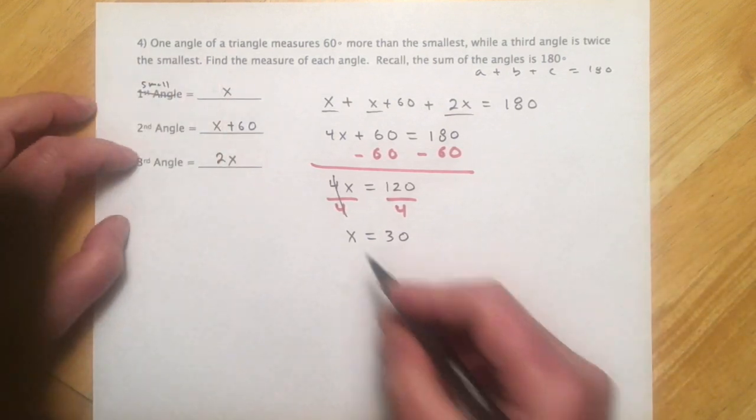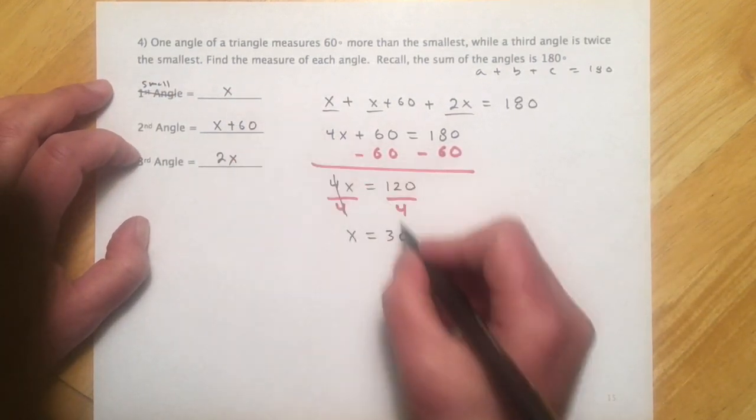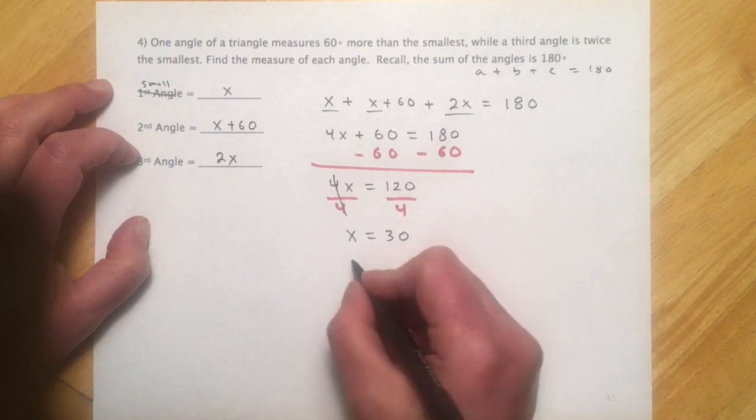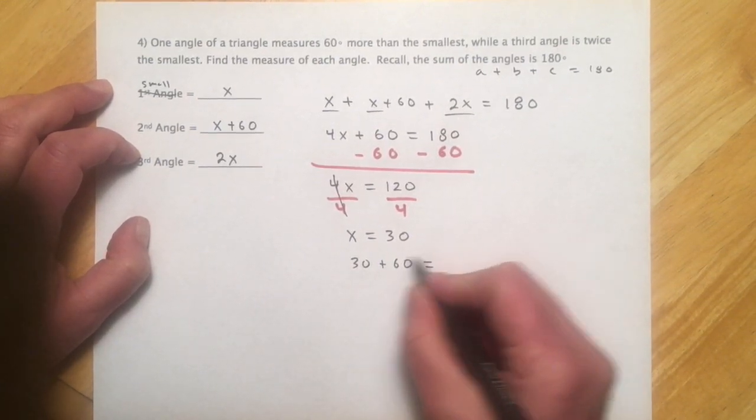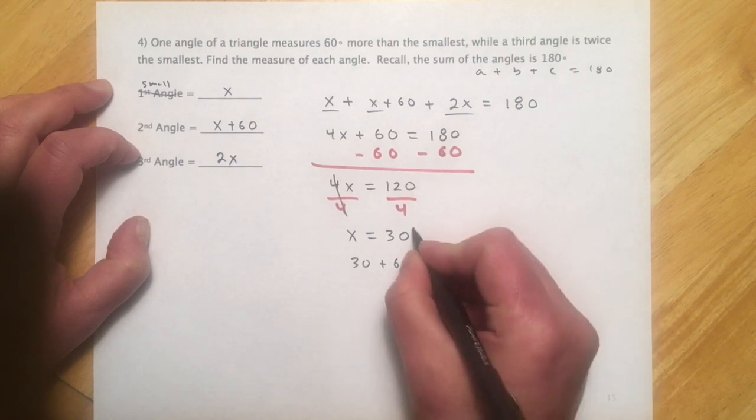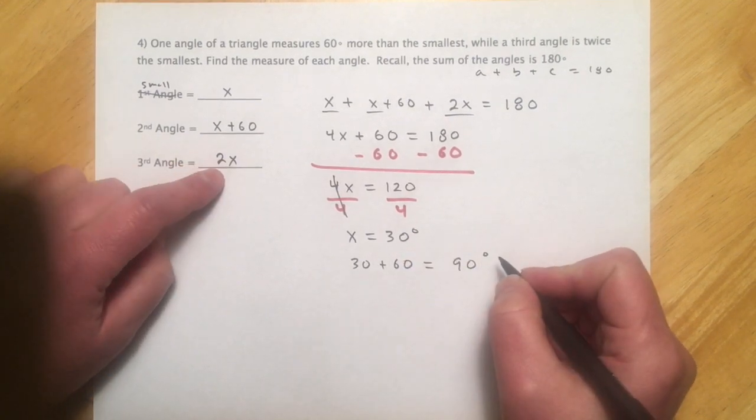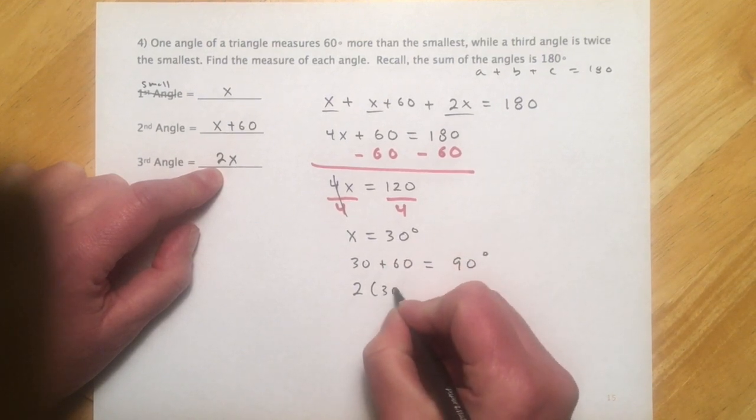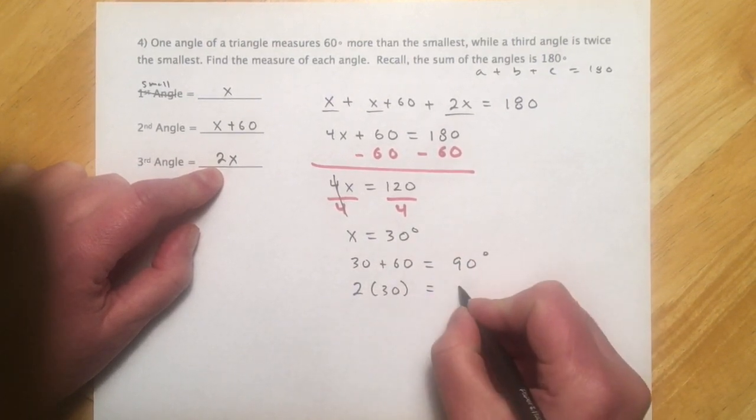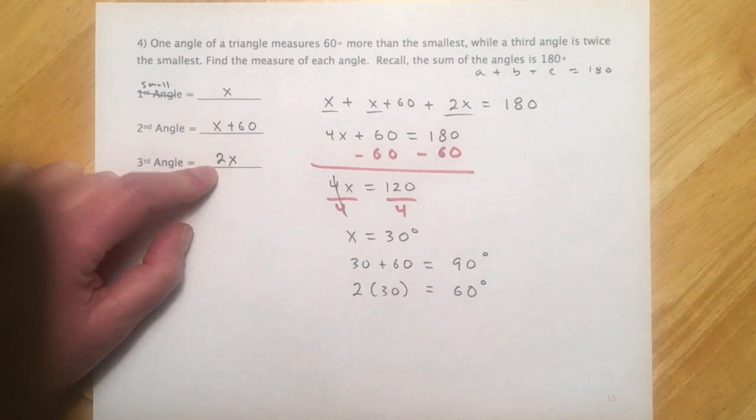So first one's 30 degrees. So then our next one was x plus 60, so that would be 30 plus 60, so 90 degrees. And then our last angle is 2x, so that will be 2 times our 30, and then that gets us 60 degrees for the third angle.